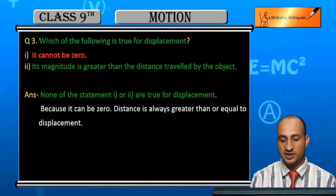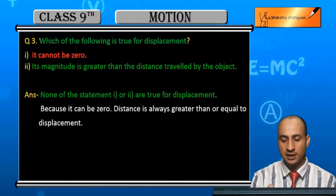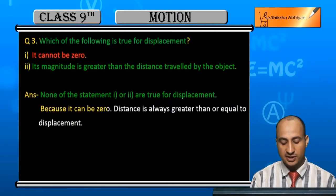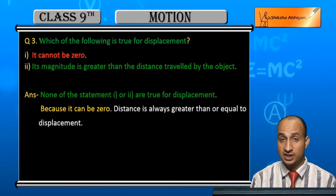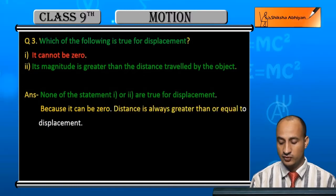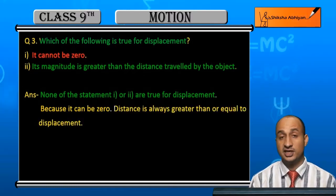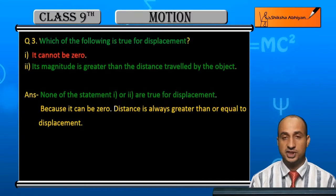For displacement: it can be zero — ye zero ho sakta hai. Also, distance is always greater than or equal to displacement — distance kya hota, displacement se hamesha greater than or equal.